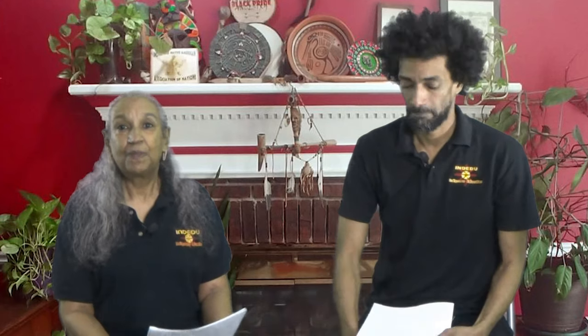Let's do a quick review. Last episode, we went over the stages of genocide. Let's list those stages one more time: classification, symbolization, discrimination, dehumanization, organization, polarization, preparation, persecution, extermination, and denial.